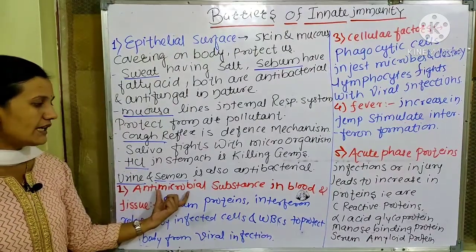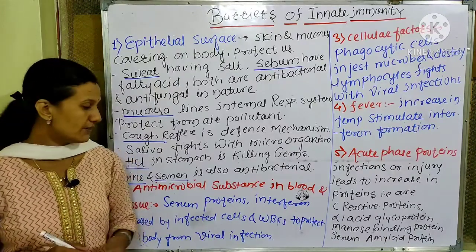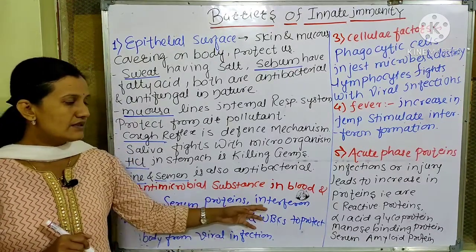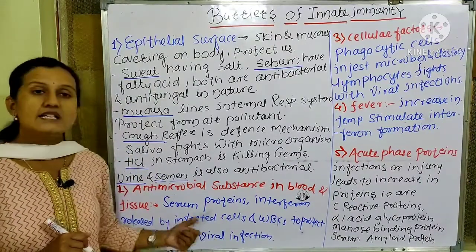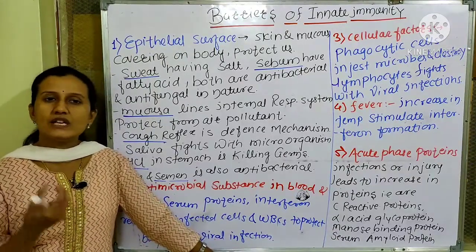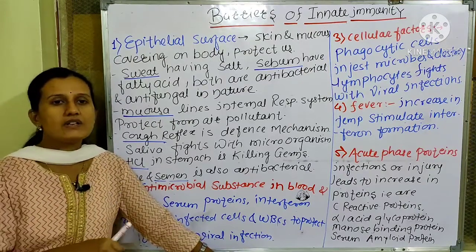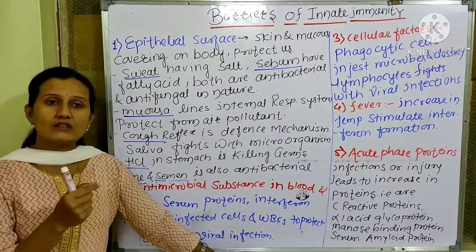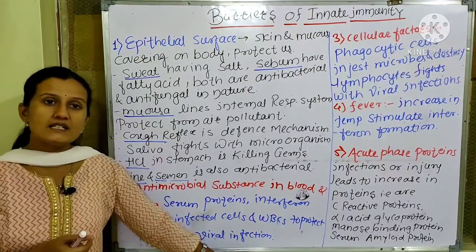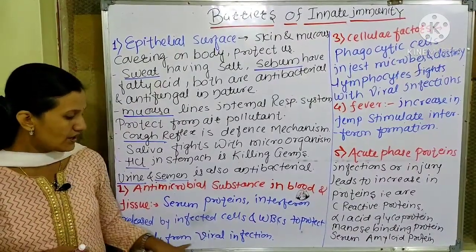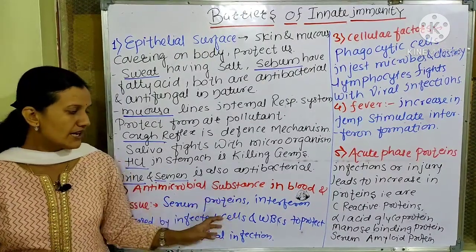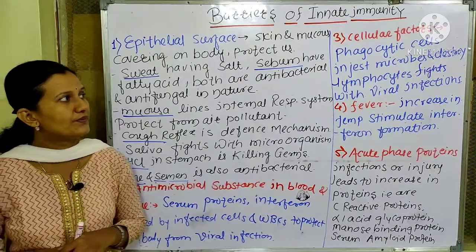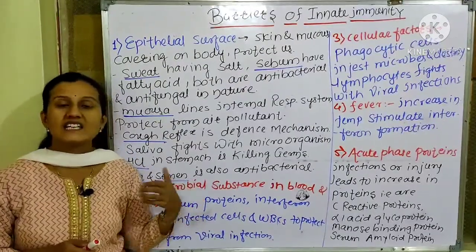The next factor is antimicrobial substances in blood and tissue. Our blood and tissue contain many antimicrobial substances, such as insoluble serum proteins in inactivated form. Some classes of interferons — which are cytokines — are released by infected cells. For example, when any tissue or organ is infected by a viral infection, the infected cells release interferons. Those interferons are released into the blood or tissue and protect our body from viral infections.